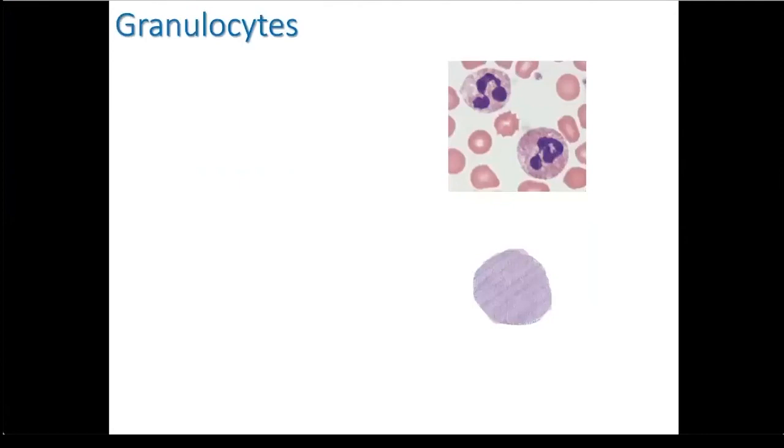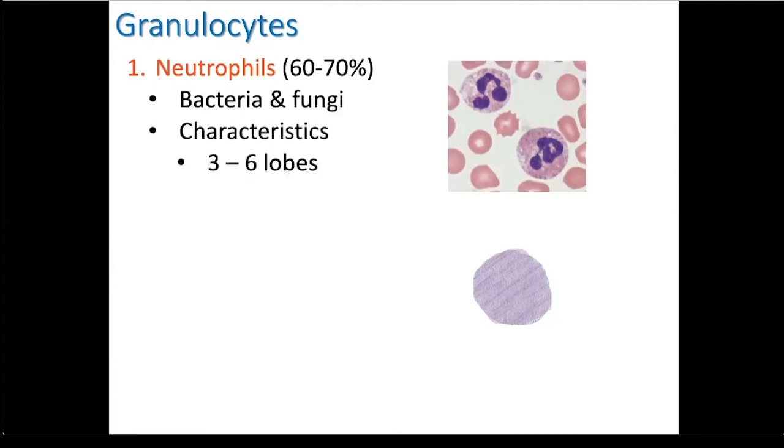Let's begin with the granulocytes. Neutrophils are the most abundant of the leukocytes in your blood. They make up between 60 to 70 percent of all the leukocytes in the blood. They are used to fight against bacteria and fungi. They have a nucleus that contains three to six lobes.